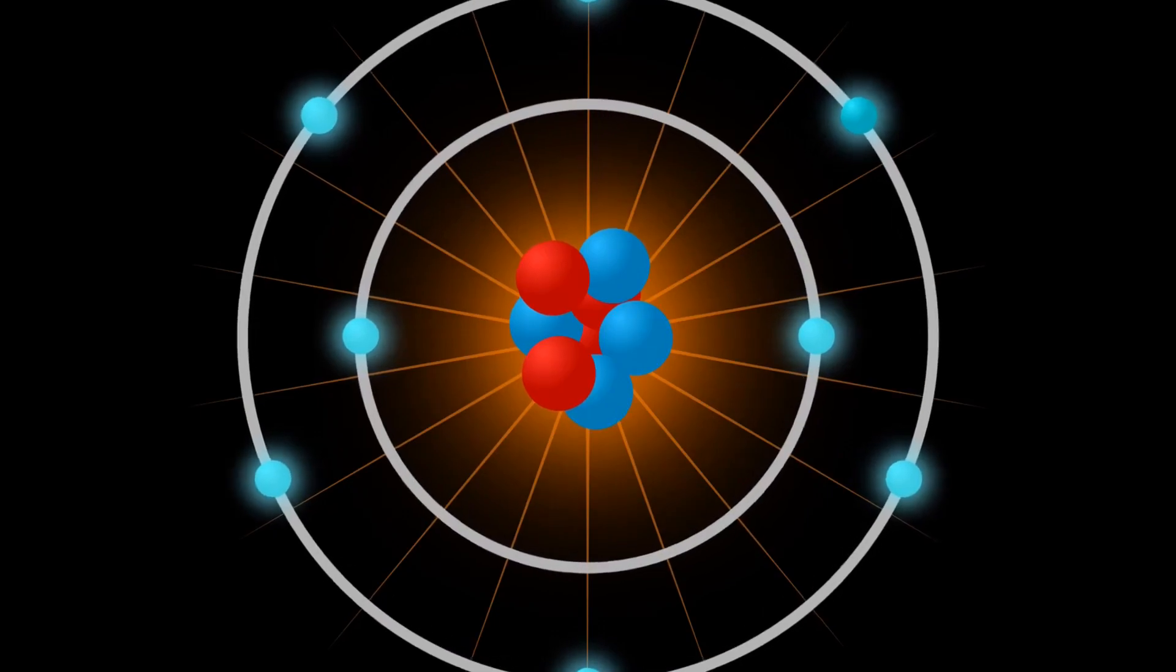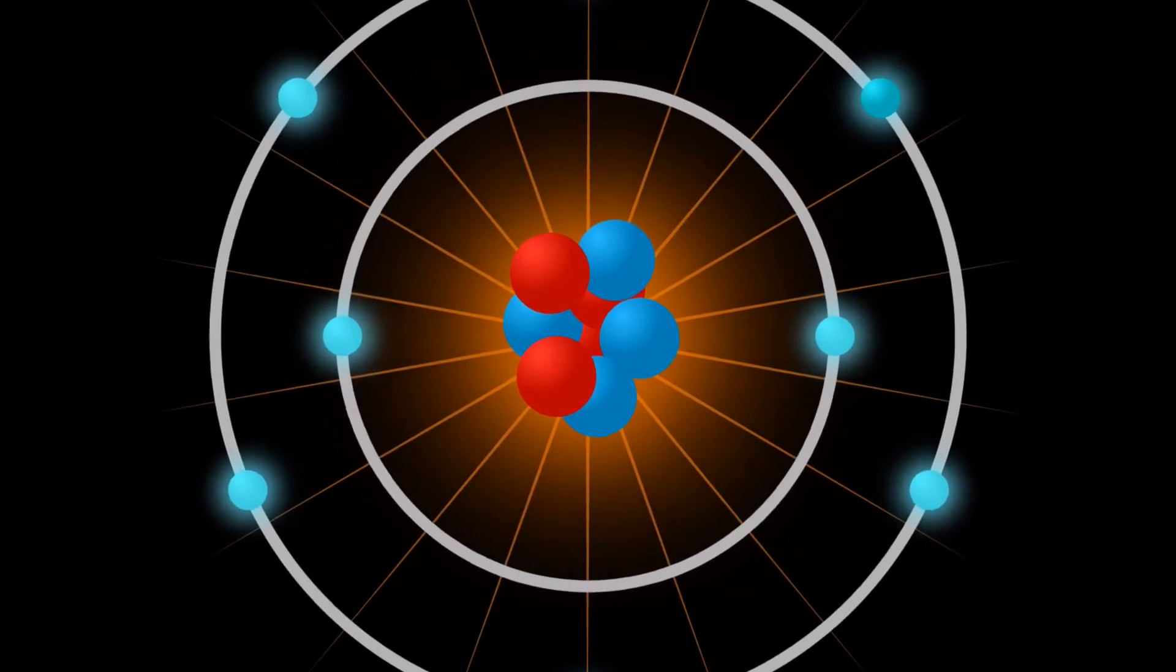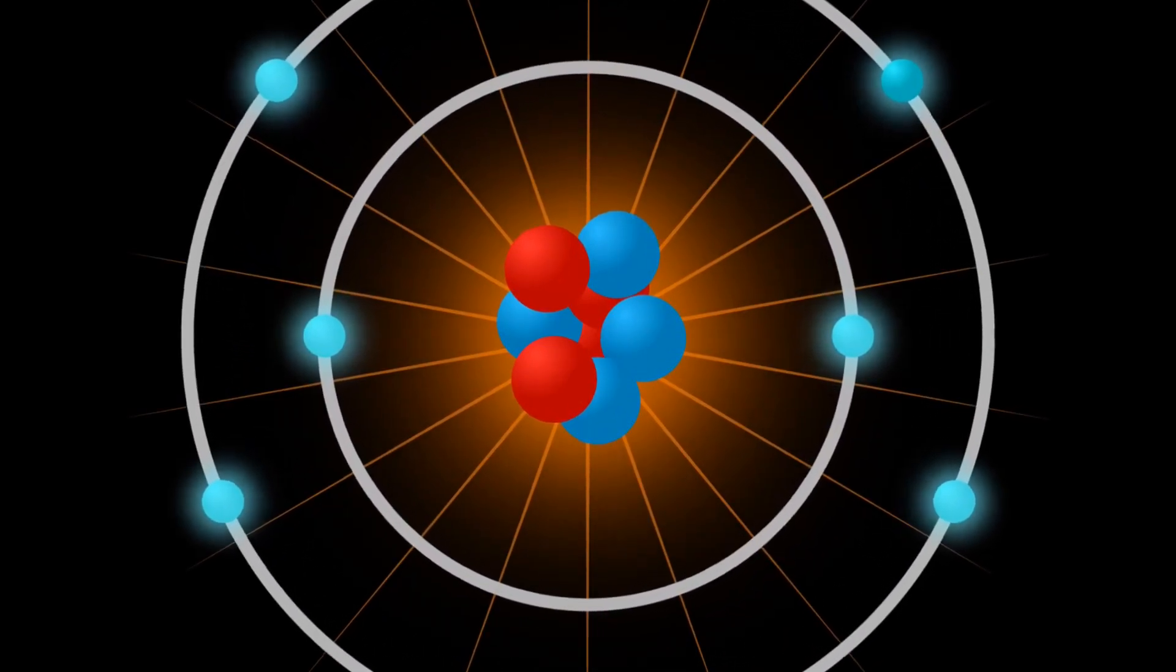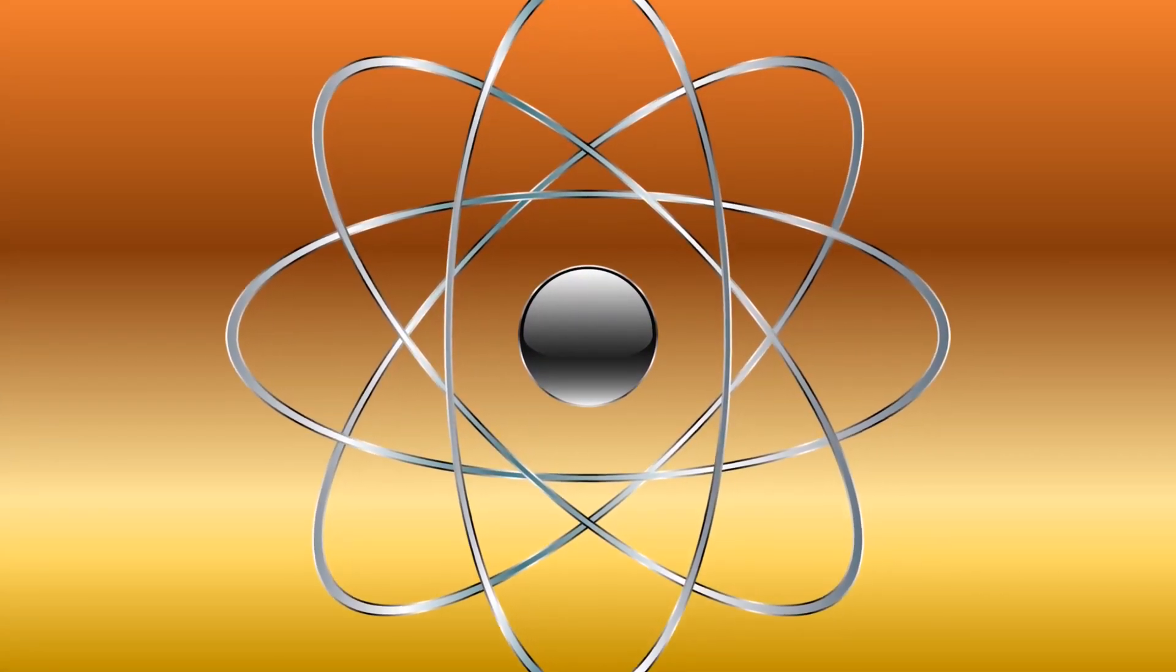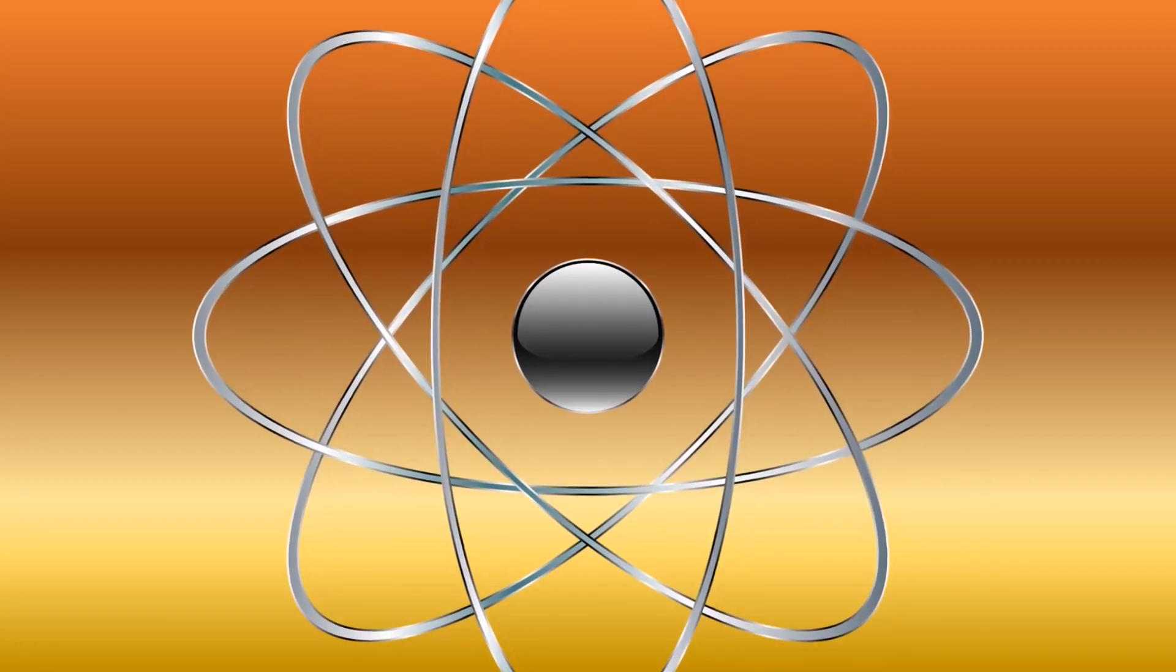In 1911, he conducted an experiment known as Rutherford scattering, in which he had alpha particles pass through a thin gold foil. He expected the alpha particles to pass through the foil without changing direction.